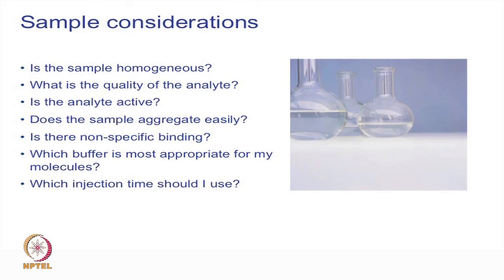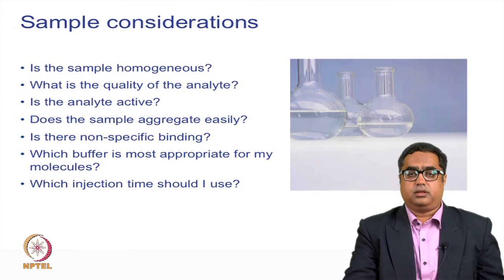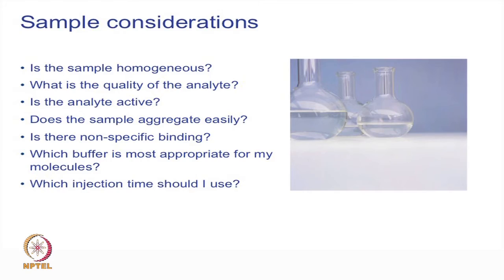The sample or analyte is a major contributor to bad data. It is very important to purify and characterize them before experimentation. Homogenous samples are required — please make sure samples are highly homogenous, good quality, active, and do not aggregate or cause non-specific binding. It is also important to understand the right buffer for a given sample and to identify good sample conditions before setting up Biacore experiments.